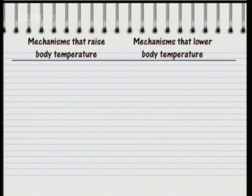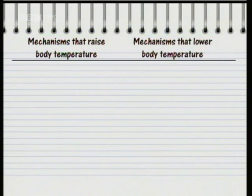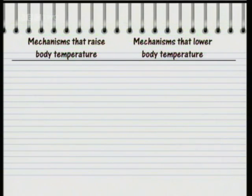Draw up two columns with the mechanisms that raise the body temperature in one column, and the mechanisms that lower the body temperature in the other. You can always go back and have another look at the animation.